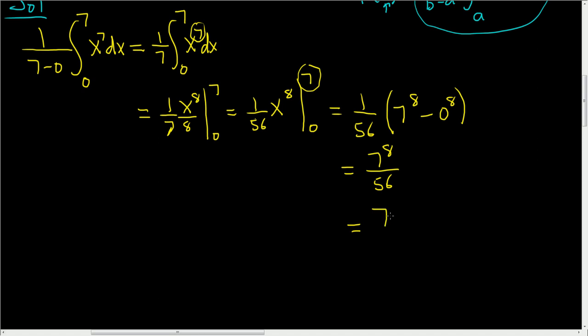Let's go ahead and do it by hand. And 7 to the 8th, and you can think of 56 as 7 times 8. Ah, look at that. There's a 1 here. So you lose one of your 7s. So you end up with 7 to the 7 over 8. So that's the average value of the function over the interval 0, 7.